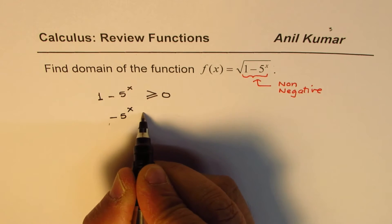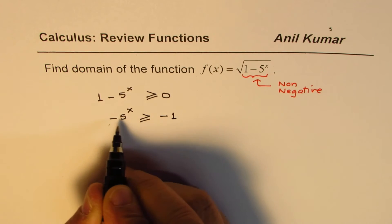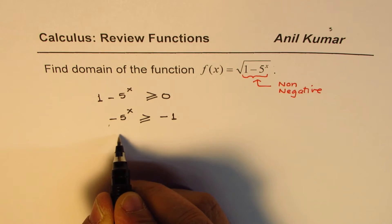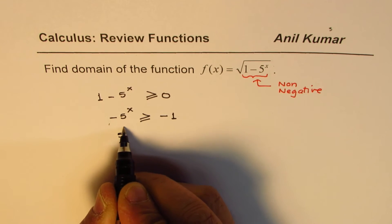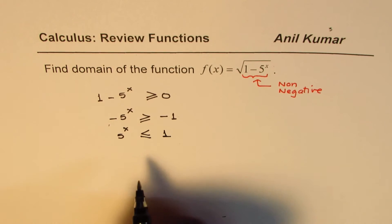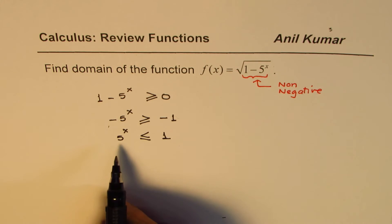So we have -5^x ≥ -1. When you multiply by a negative number, the inequality also changes, so if you multiply by a negative number, you get 5^x ≤ 1, correct? Now to solve such an exponential function, what should you do? You can take log both sides.